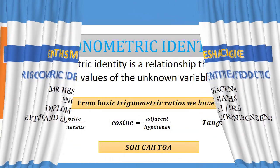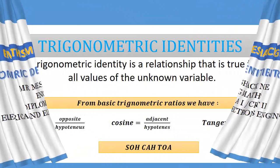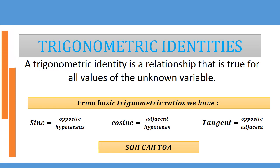So now we define trigonometric identities. A trigonometric identity is a relationship that is true for all values of the variable. Most of the time the variable is always an angle, so we are checking the relationship that will be true for that angle that we shall be looking at.